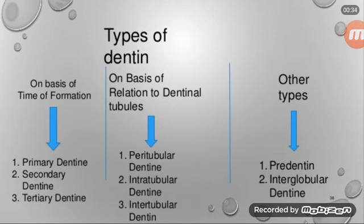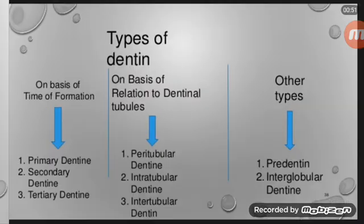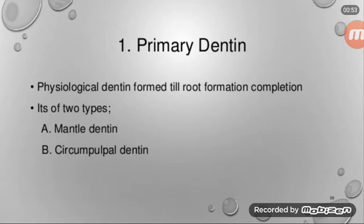On the basis of relation of dentine and tubules, these are of two types: number one, peritubular dentine and intertubular dentine. The other types of dentine are pre-dentine and interglobular dentine.